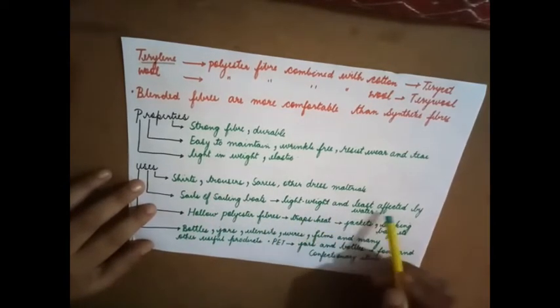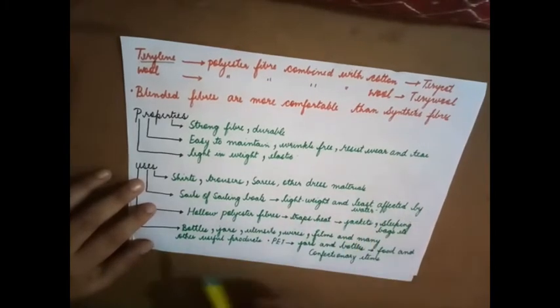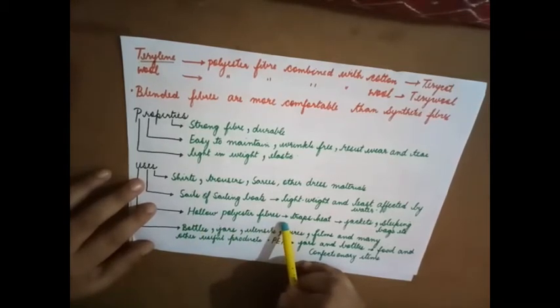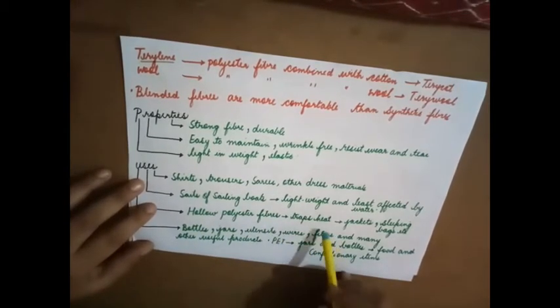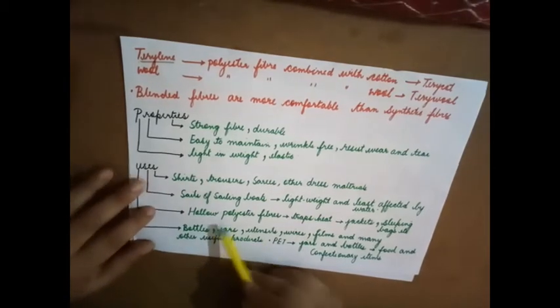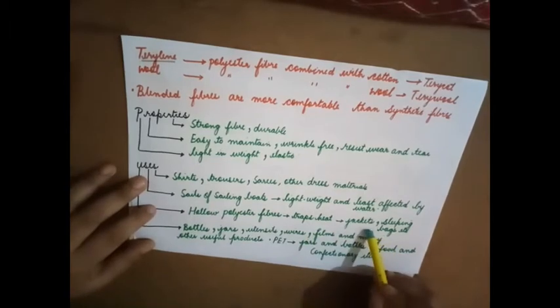Lightweight - why is it lightweight and least affected by water? Hollow polyester fibers, what do they do? Hollow means it does not have air, it is empty. It traps heat, so that's why it is used in jackets and sleeping bags.